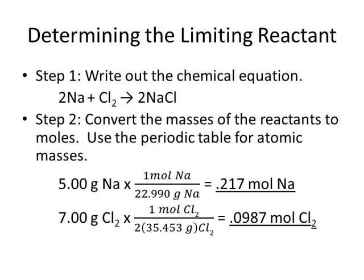First, we must determine the limiting reactant. We write out the chemical equation, and then convert the masses of the reactants to moles. So 5.00 grams of sodium is 0.217 moles, and 7.00 grams of chlorine is 0.0987 moles.